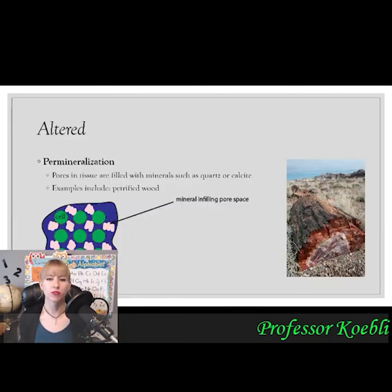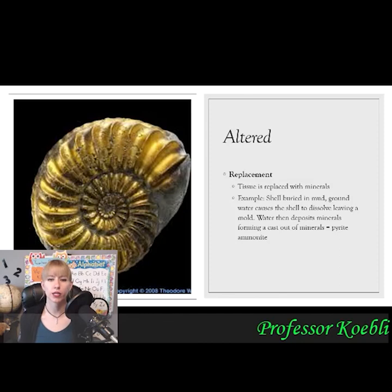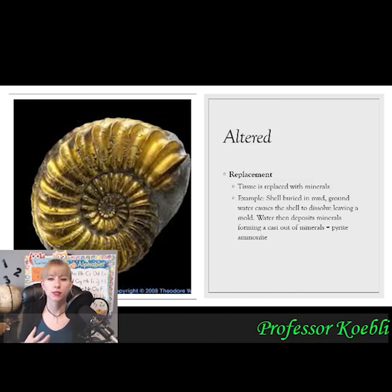Another altered type is replacement — unlike permineralization where original material remains, replacement means tissue is completely replaced with minerals. For example, a shell buried in mud dissolves, leaving a mold. Water then gets into the mold and creates an entire cast out of pyrite, such as this pyrite ammonite.